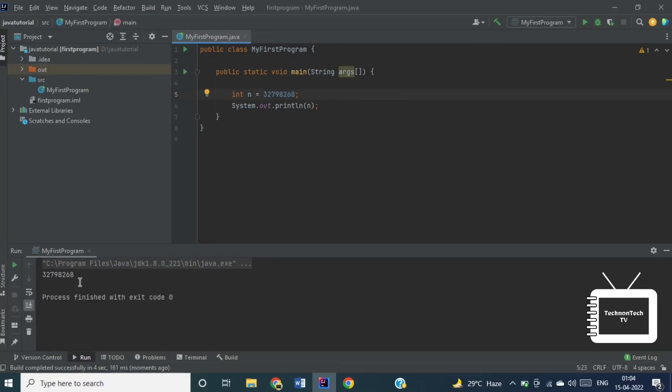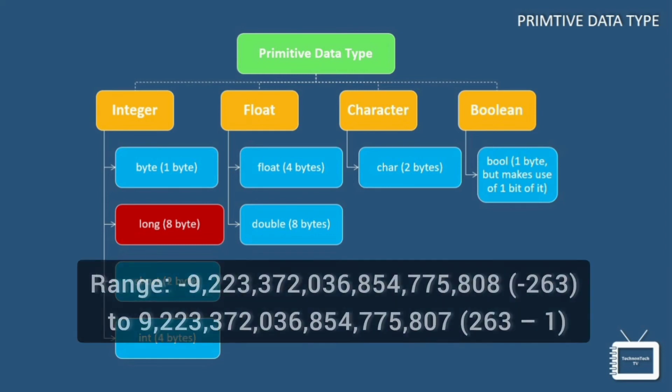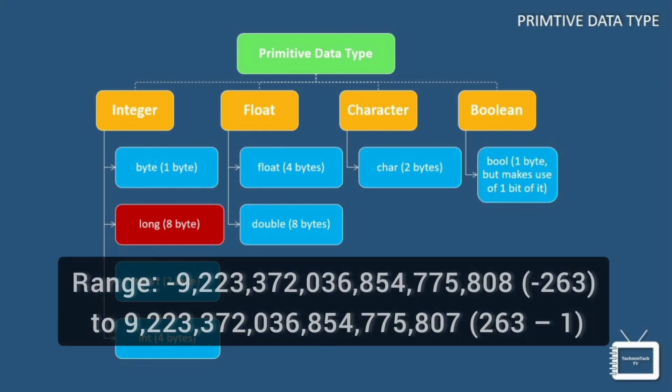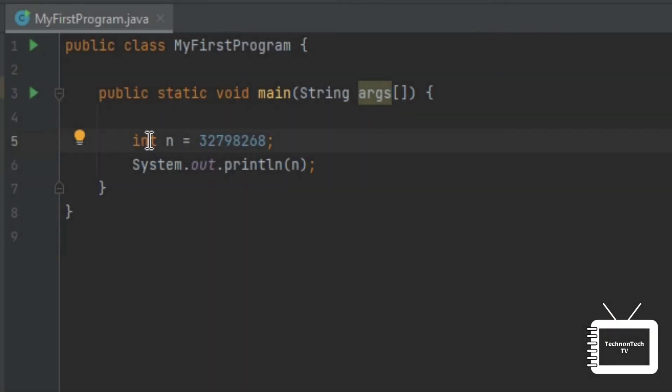So here we can see the output. Next is long data type. It is a 64-bit 2's complement integer. By default the size of a long data type is 64 bit and its value range from 2 raise to 63 to 2 raise to 63 minus 1.